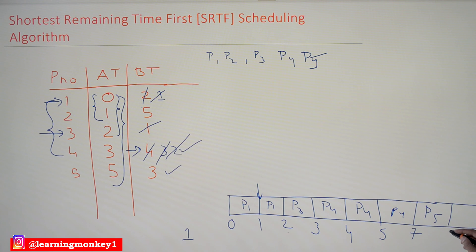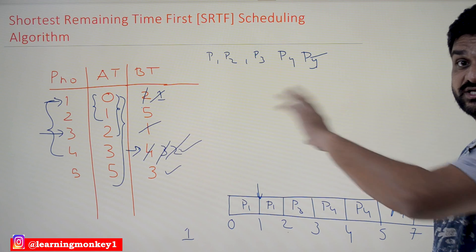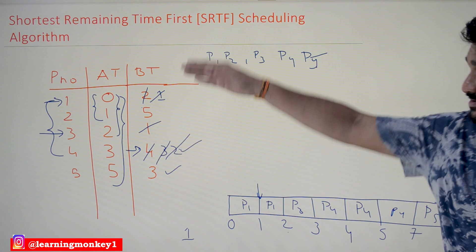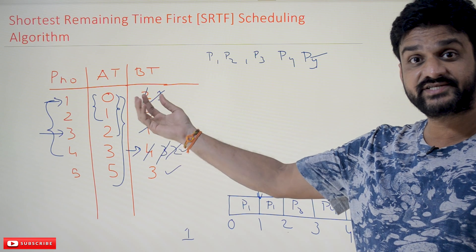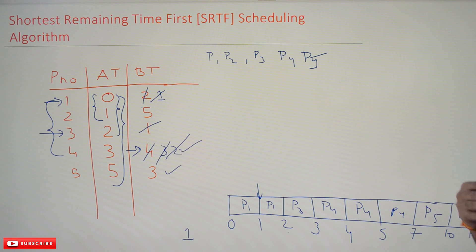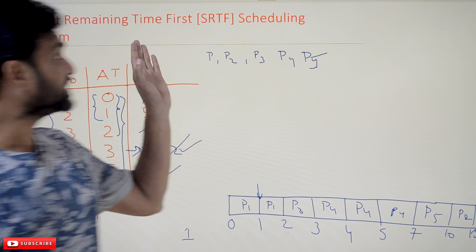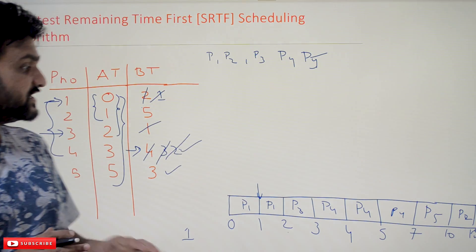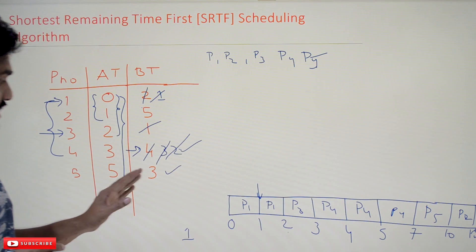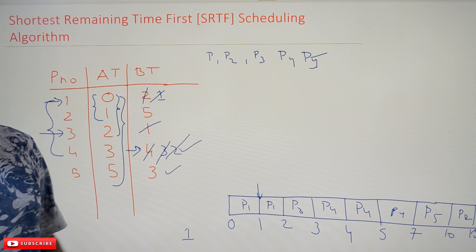After P5, process P2 is taken next, which has the highest burst time of 15 and is therefore taken at the end. See how logical it is — among all the processes, the highest burst time is for P2, so it is taken last in order to maintain efficient average waiting time. This is how Shortest Remaining Time First gets executed. The key point to understand is how the preemptive algorithm works.